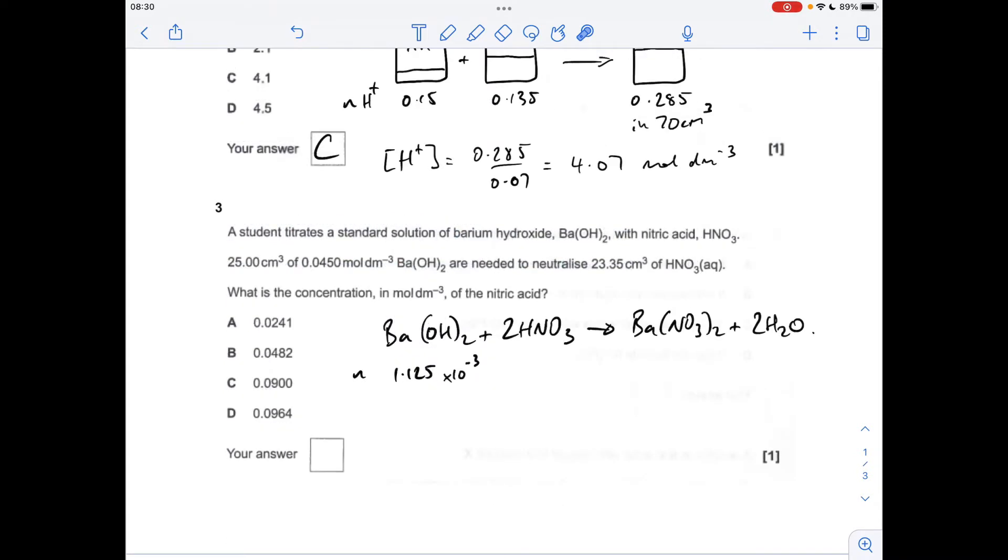Question three is just a straightforward titration question. First thing I've done is worked out the moles of barium hydroxide, just concentration times volume. So the moles of nitric acid will be double that, 2.25 times 10 to the minus 3. The concentration of nitric acid is the moles over the volume, but remember the volume needs to be in decimeters cubed. That gives us 0.0964 moles per decimeter cubed. So it was D.